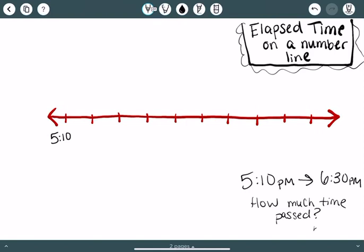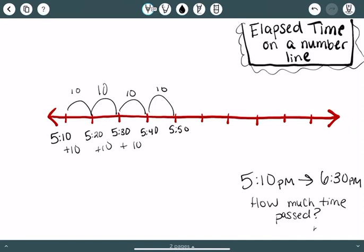So from 5:10 if I add 10 minutes now I'm at 5:20. So this jump from 5:10 to 5:20 was 10 minutes. Then if I'm going to go and add another 10, jump by 10 minutes, I can go from 5:20 to 5:30. I'm going to keep up with that: 5:40, 5:50. Remember I'm adding 10 each time.